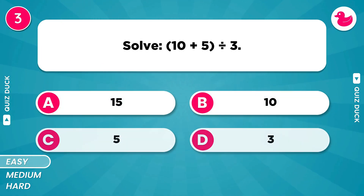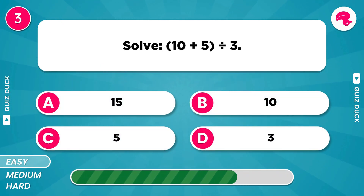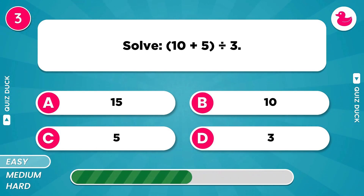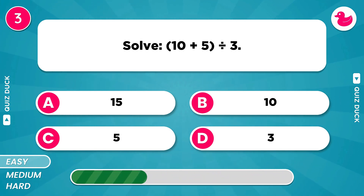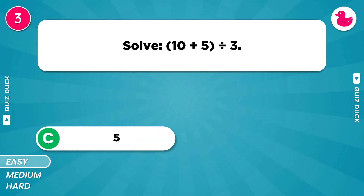What is the value of 10 plus 5 divided by 3? The answer is 5.